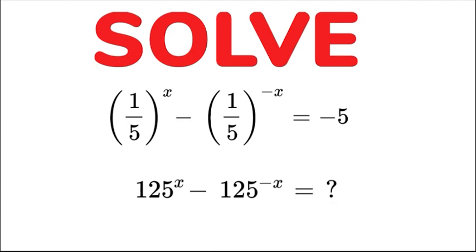Hello and welcome back to Maths Plus. Today we have an interesting problem with fractions and exponents. We have (1/5)^x minus (1/5)^(−x) is equal to minus 5, and we're looking for 125^x minus 125^(−x). Maybe give it a try and let me know how you get on.